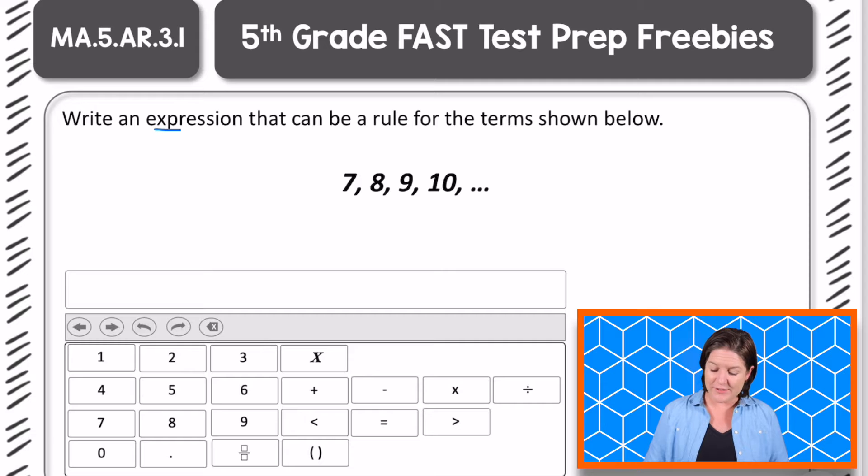This says to write an expression. An expression does not contain an equal sign. Just keep that in mind. Write an expression that can be a rule for the terms below. Okay, so we have 7, 8, 9, 10. Seven would be term 1, eight would be term 2, nine would be term 3, and 10 would be term 4.